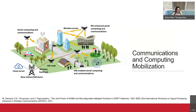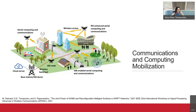Seeing our system as a whole, we propose a concept called communications and computing mobilization. The concept of mobilization comes from military terms — you use all your available communications and computing resources and technologies to improve the system. We can see UAVs, drones, reconfigurable intelligent surfaces, integrated access and backhaul, and communication to the core internet. We mobilize all those resources to enable better quality of service and quality of experience in next-generation systems.